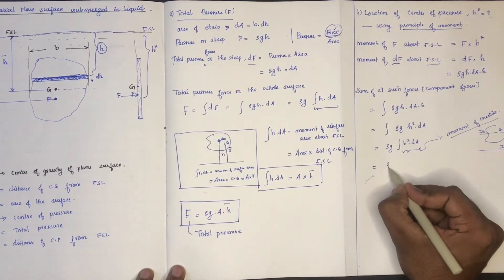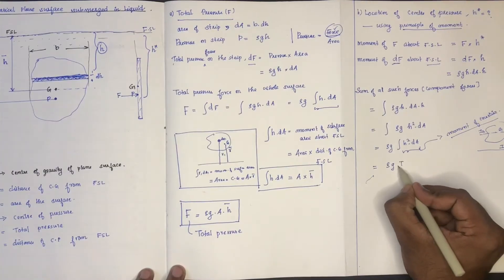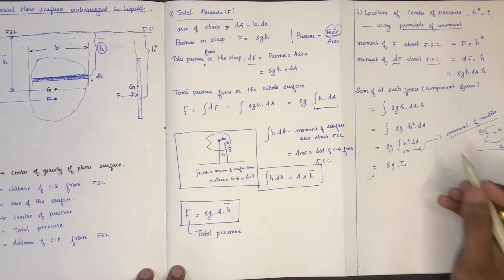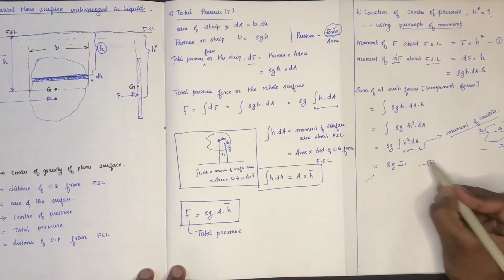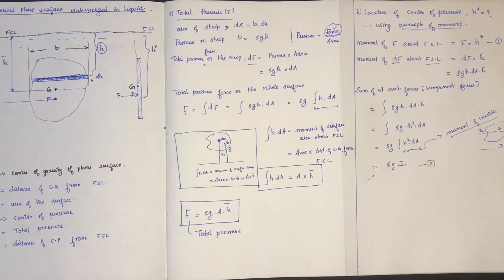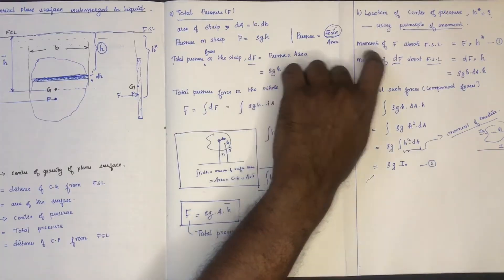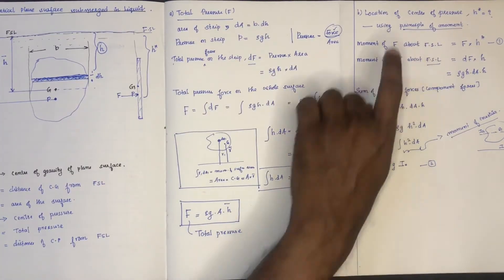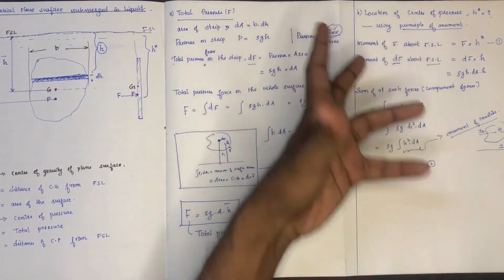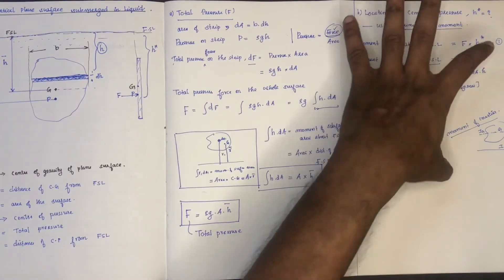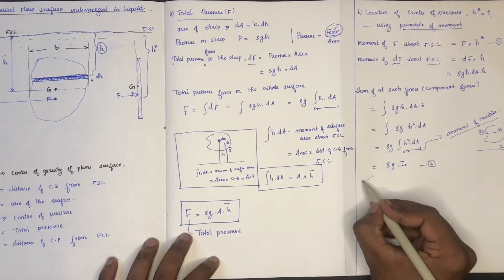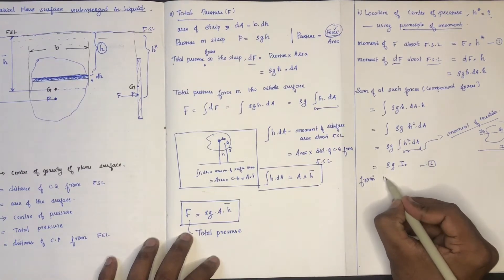This is equation number 1 and this is equation number 2. Using the principles of moment, the sum of the component force moments will be equal to the resultant moment. This is equation number 2 — principles of moment.